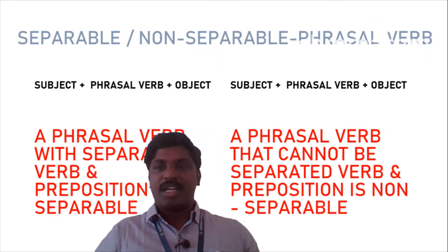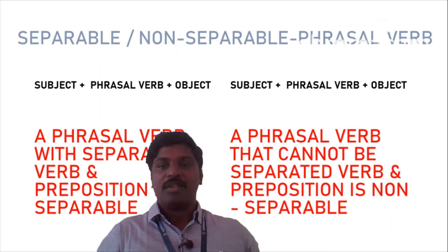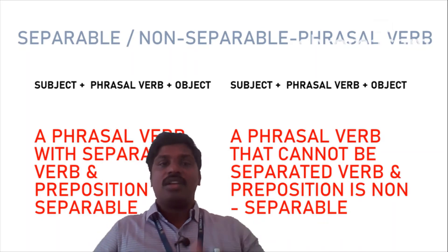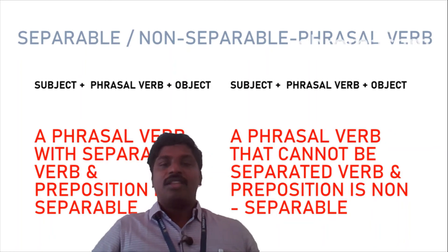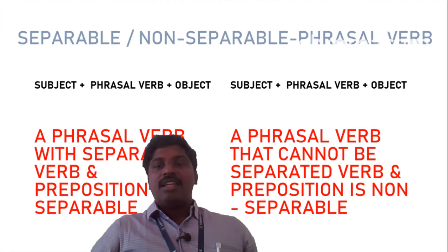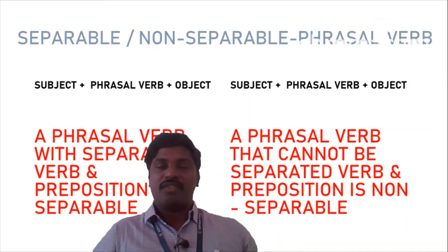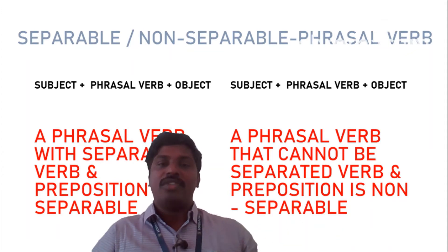In a non-separable phrasal verb, if you cut the phrasal verb in the middle and substitute the object, it will not make meaning. The verb and the preposition are non-separable. If you can separate it, that makes it a separable phrasal verb. If you cannot separate it, it becomes a non-separable phrasal verb. These are theoretical in nature, but we are going to look at examples from our own textbook, and practice will make these ideas permanent.